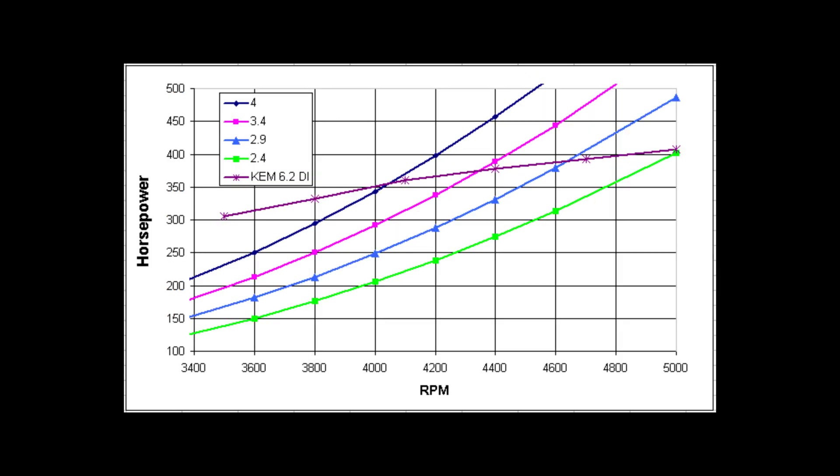So this shows that with the Chem 6.2 DI engine, if you go from a 4.0 to a 3.4 impeller, then you'll pick up roughly 300 RPM and maybe 25 horsepower on the top end. So a question to ask is whether this is exactly what would happen, and the answer is no. This is theory, and theory is different from practice. So you'd actually have to test it to see what happens.